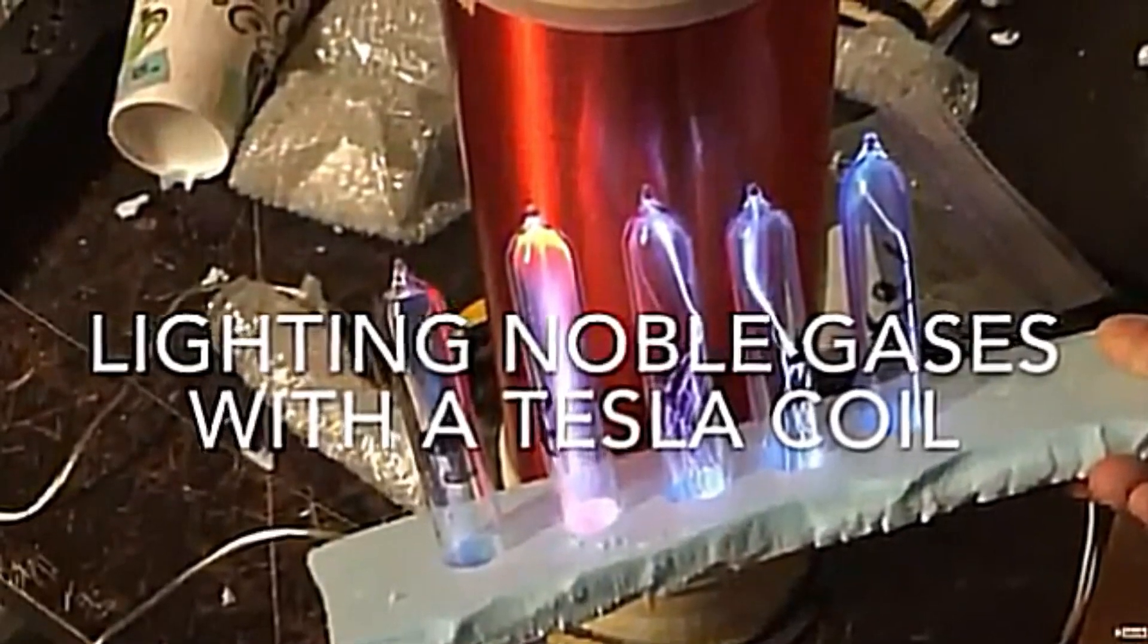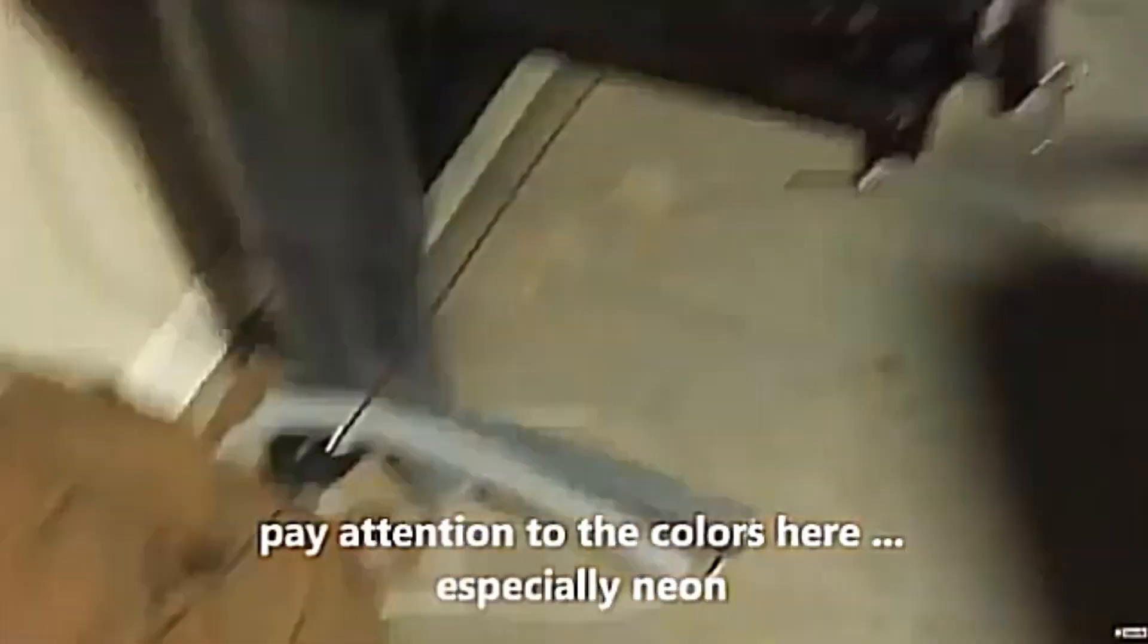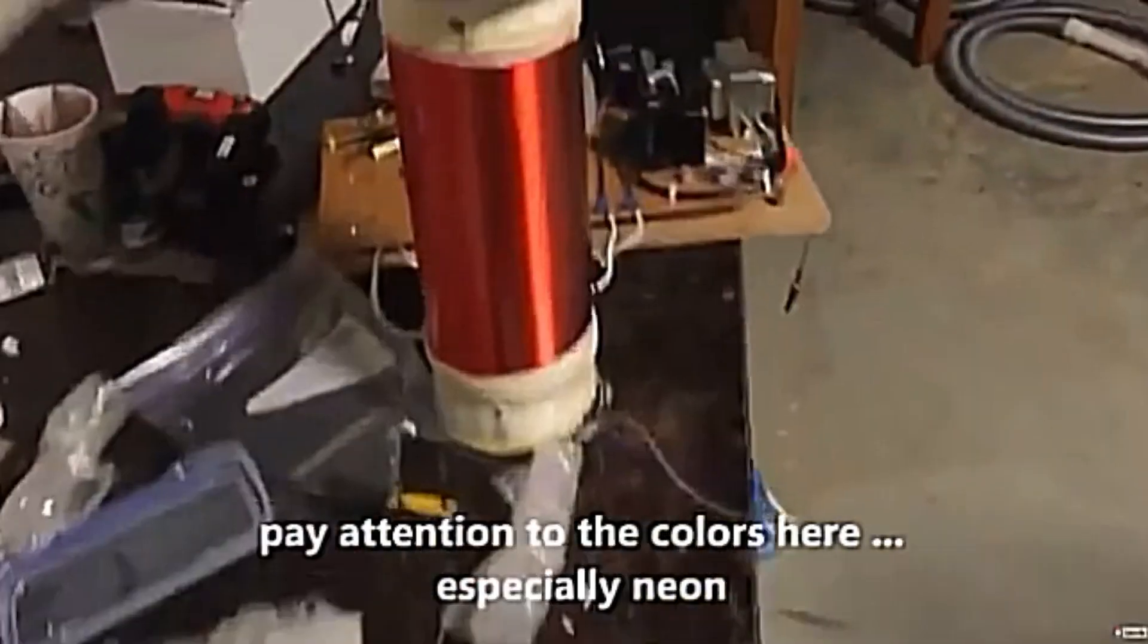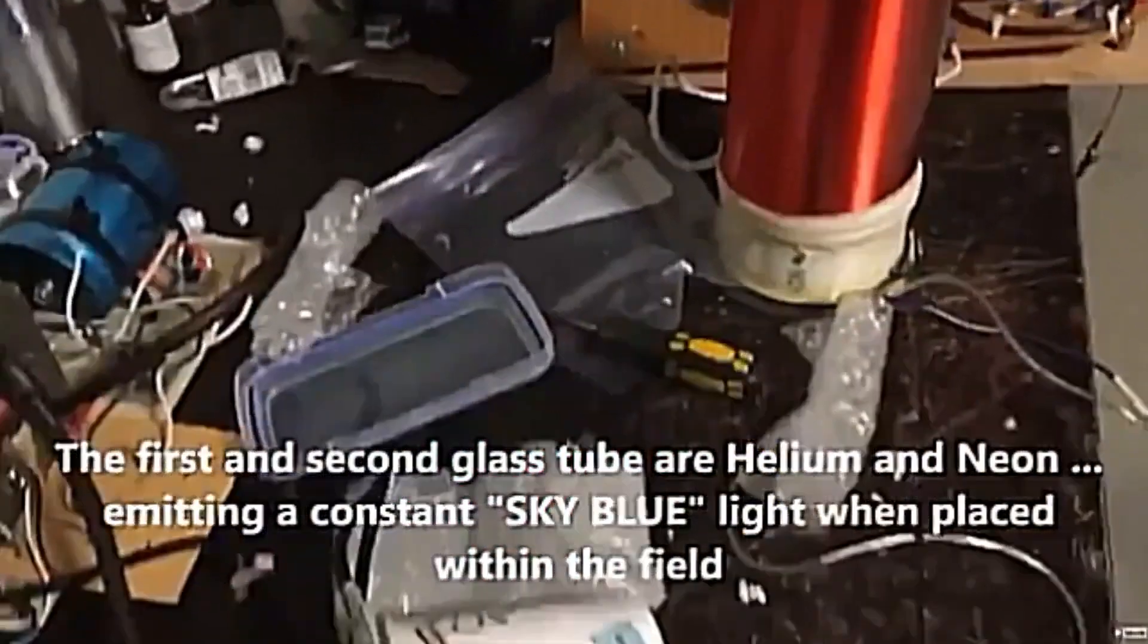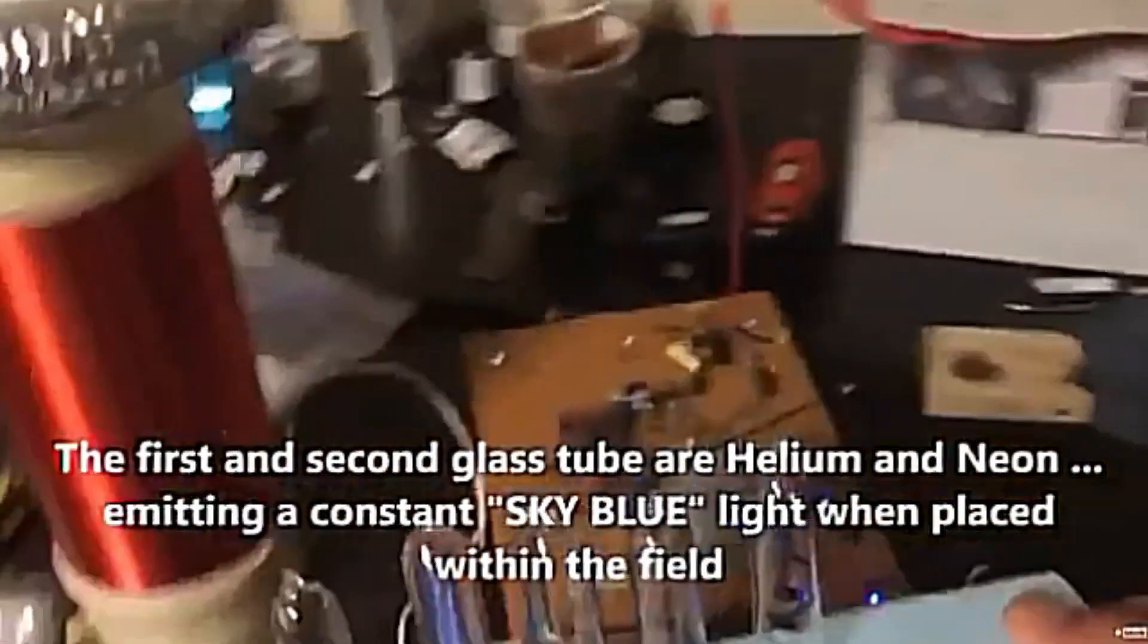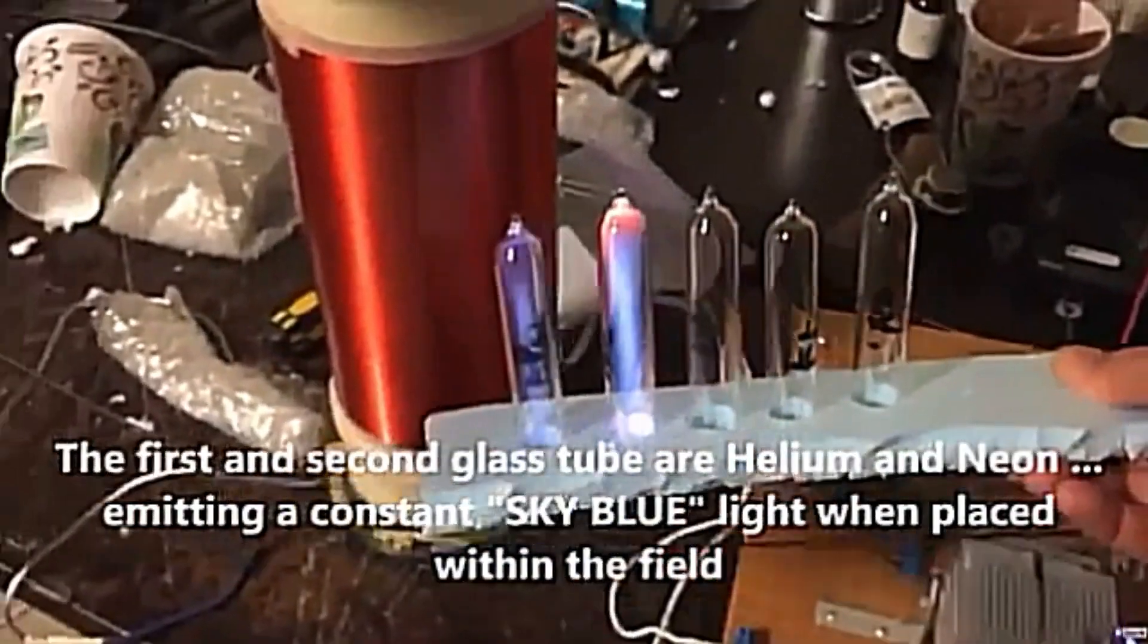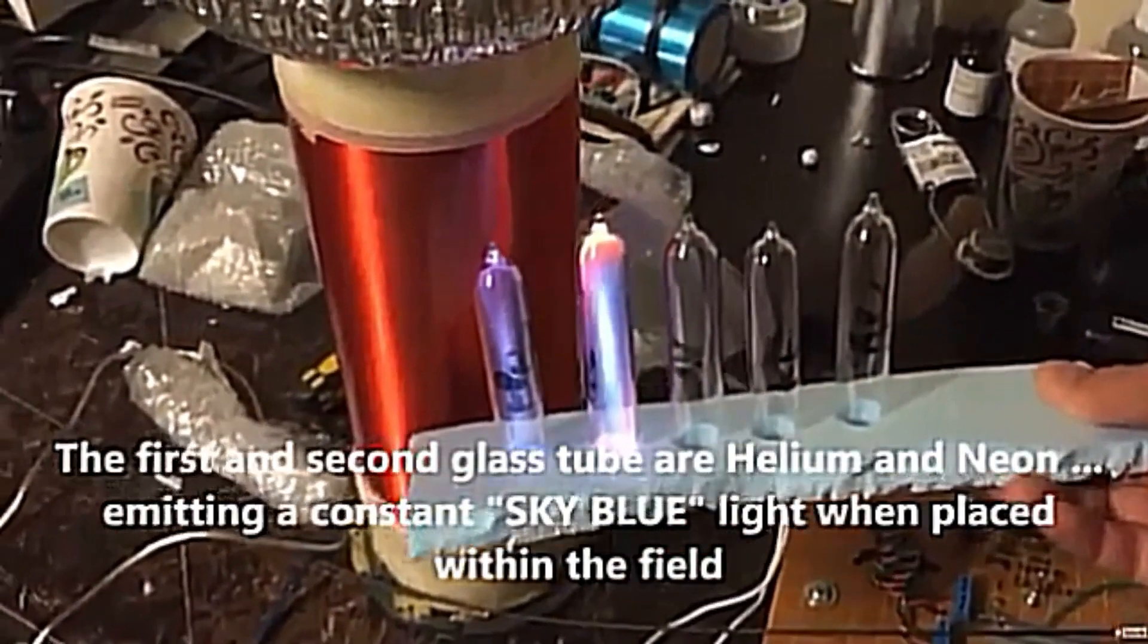Now let me show you how to light up noble gases with a Tesla coil. I want you to pay attention to the colors here, especially the neon. The first and second glass tube are helium and neon, which will emit a constant sky blue light when placed within the field.